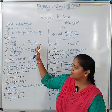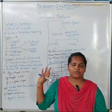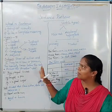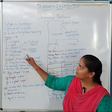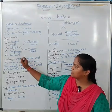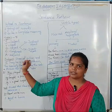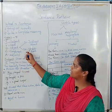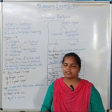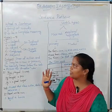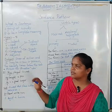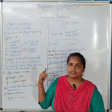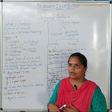How many types of sentence patterns are there? Five types. What are the five types? Subject, Verb, Object, Complement, and Agent. If you look at the five types, the subject is two types and the object is two types — indirect object and direct object.